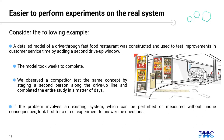Checkpoint two: when it's easy to perform experiments on the real system. A detailed model of a drive-through fast food restaurant was built to test adding a second drive-up window — it took weeks to complete. A competitor tested the same concept by staging a second person with a remote handheld terminal and voice communication along the drive-up line, completing the same experiment in just a few days. If the problem involves an existing system that can be used or measured without consequences, look first for a direct experiment to answer the questions.